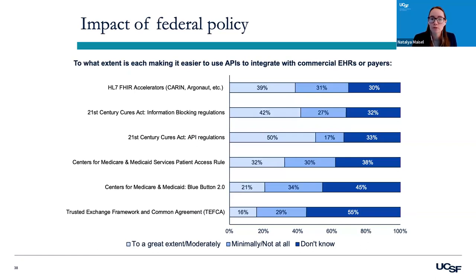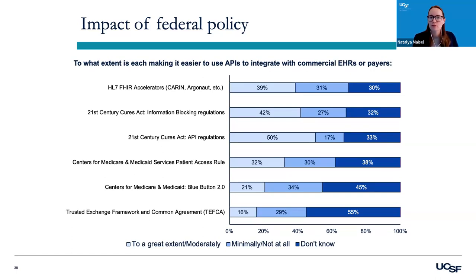Finally, we asked about the impact of federal policy on making it easier to use APIs with commercial EHRs or payers. The dark blue bars show high 'don't know' percentages — 45% of companies didn't know whether CMS Blue Button 2.0 was making it easier, and over 55% didn't know if TEFCA was making it easier. Looking at the companies that reported federal policy was helping moderately or to a great extent: 39% said HL7 FHIR accelerators were helping, 42% said the 21st Century Cures Act information-blocking regulations were helping, and 50% said the Cures Act API regulations were making it easier to integrate.